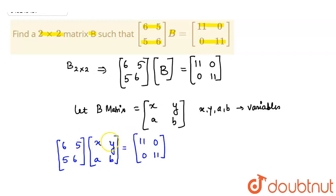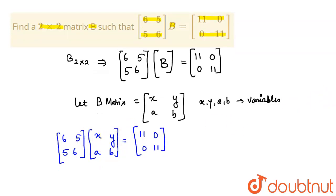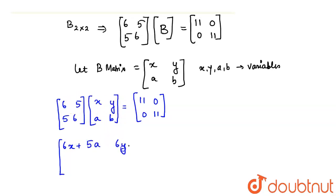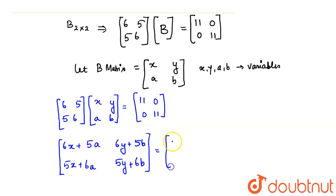Now we multiply these two matrices and equate the elements. We will have four equations that we can solve to find the values of x, y, a, and b. The equations become: 6x + 5a, 6y + 5b, 5x + 6a, and 5y + 6b, equal to the corresponding elements of 11 0 0 11.